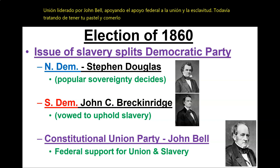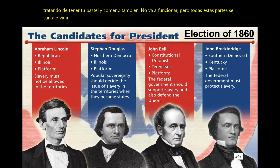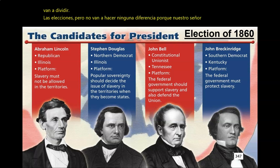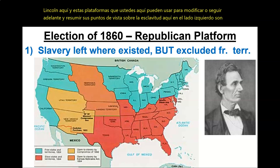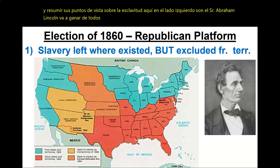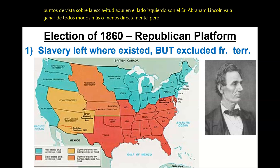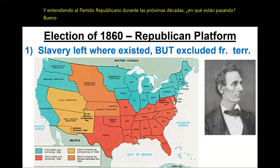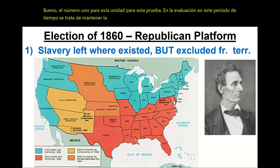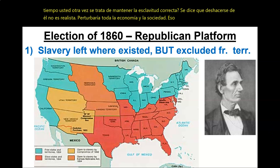All these parties are going to divide the election up, but it's not going to make any difference because Abraham Lincoln is going to win anyway, pretty much outright. It's important to know — and this is important for future units — the Republican Party platform. Number one for this unit: it's about keeping slavery right where it is. Getting rid of it is unrealistic; it would disrupt the entire economy and society. That's an abolitionist mindset, but it's not the official Republican Party mindset.